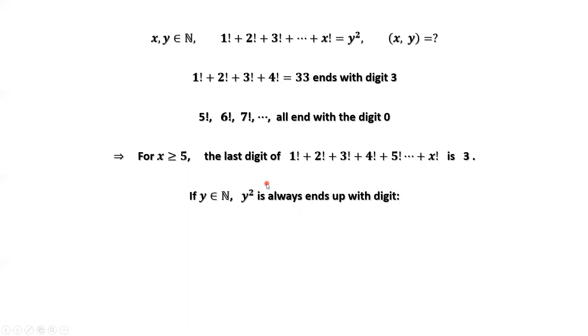Here is a simple fact. If y is a positive integer, y squared always ends up with the following digits: 0, 1, 4, 5, 6, 9. You can easily check this.